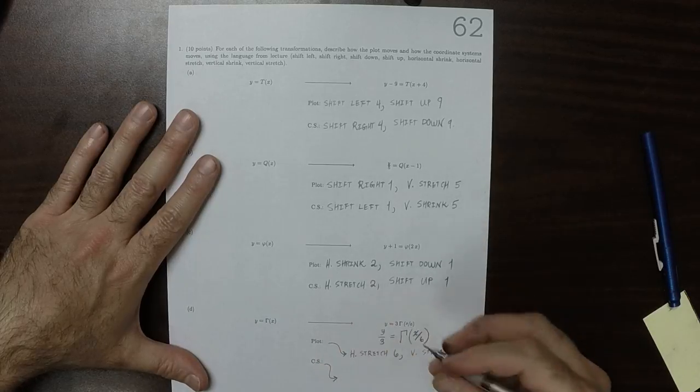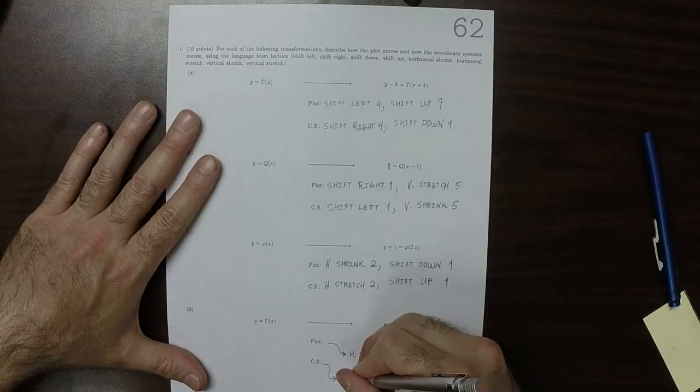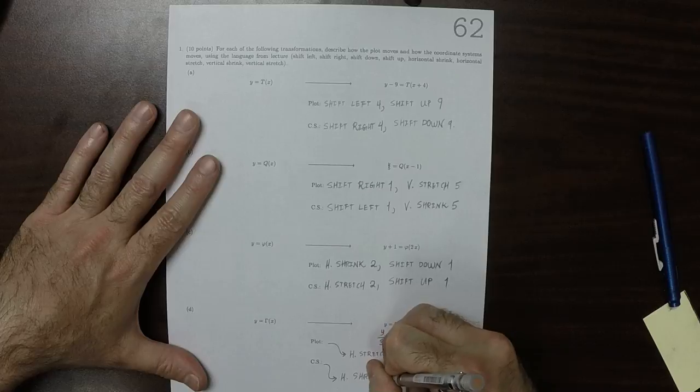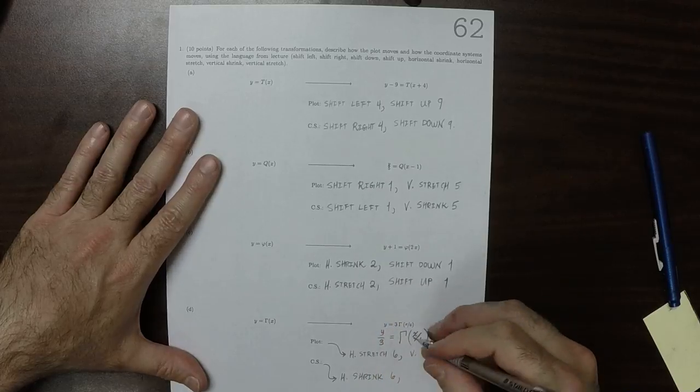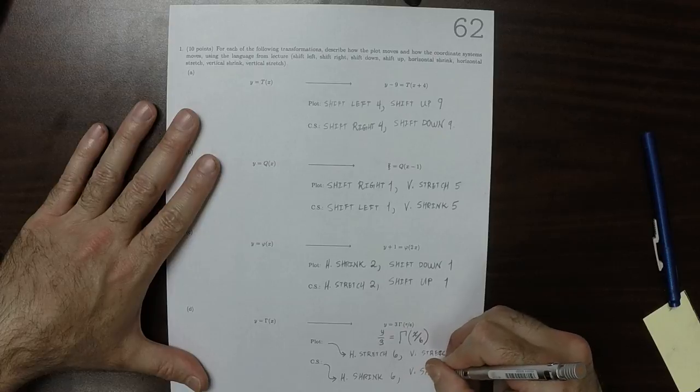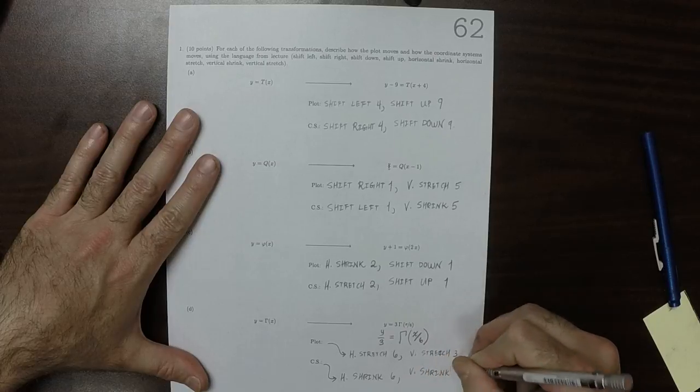Whereas the coordinate system will undergo a horizontal shrink by a factor of 6 and a vertical shrink by a factor of 3.